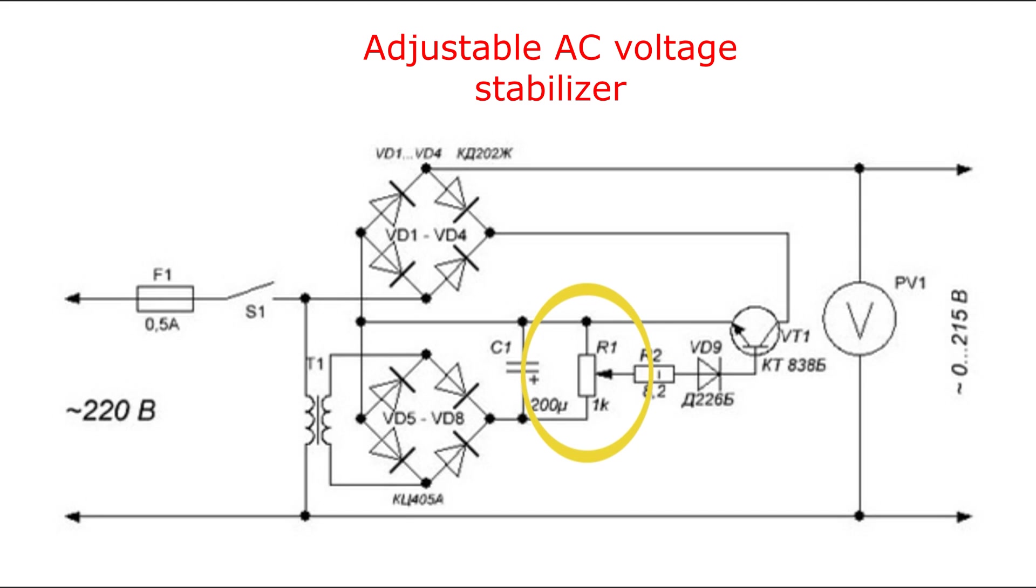Variable resistor R1 must be wirewound with a power of at least 2.5W. To increase the load power, it is recommended to replace the regulating transistor, for example, KT856 or KT834 or KT847.